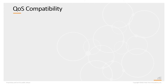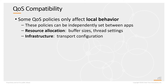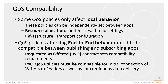Let's talk about compatibility. When you're setting QoS policies, some of those policies only affect local behavior — the behavior of the application in which DDS is being used — and those values can be set independently from values set by other applications. Other QoS policies may affect end-to-end behavior, and those need to be set compatibly between publishing and subscribing applications. This is called request versus offered, or RxO — a contract that sets compatibility requirements between sending applications and receiving applications.